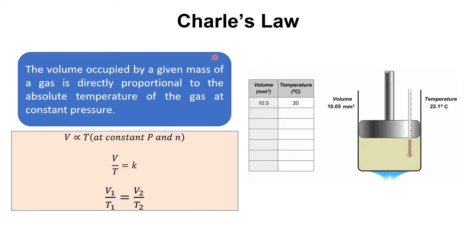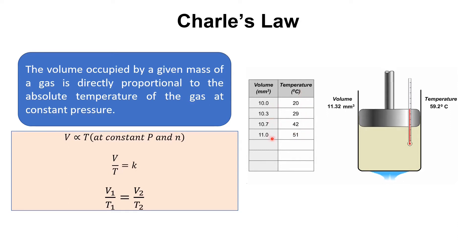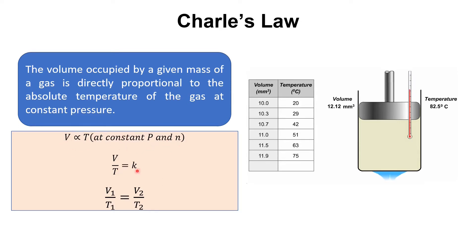The next law is Charles' Law. According to this law, the volume occupied by a given mass of a gas is directly proportional to the absolute temperature of the gas at constant pressure. Here, the mass of the gas and the pressure are kept constant. Initially the volume was 10 mm³ and the temperature was 20°C. As the temperature was increased by heating the container, the volume also increased — at 51°C, the volume became 11 mm³. So V over T is constant, and V1 over T1 equals V2 over T2.